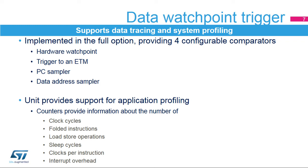The Embedded Data Watchpoint Trigger provides four comparators configurable as a hardware watchpoint, ETM trigger, PC sampler, or data address sampler. It provides the necessary information for data tracing and system profiling analysis, for which it embeds counters for counting the number of clock cycles, load and store operations, sleep cycles, clocks per instruction, and also information about interrupt overhead. It can also generate reports about the application profile.